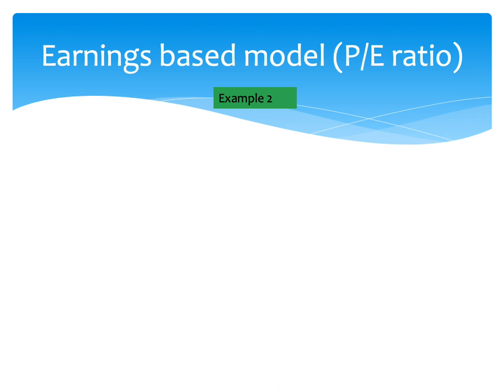In Tenant plc, there are clear synergies between the two organisations. Tenant believes it will enjoy synergies of £10,000 per year as a result of the acquisition. Using the earnings-based model, we want to work out the maximum Tenant would pay for Who. The first step is to work out the acquiring company's market value before the acquisition, which is straightforward using PE ratios.